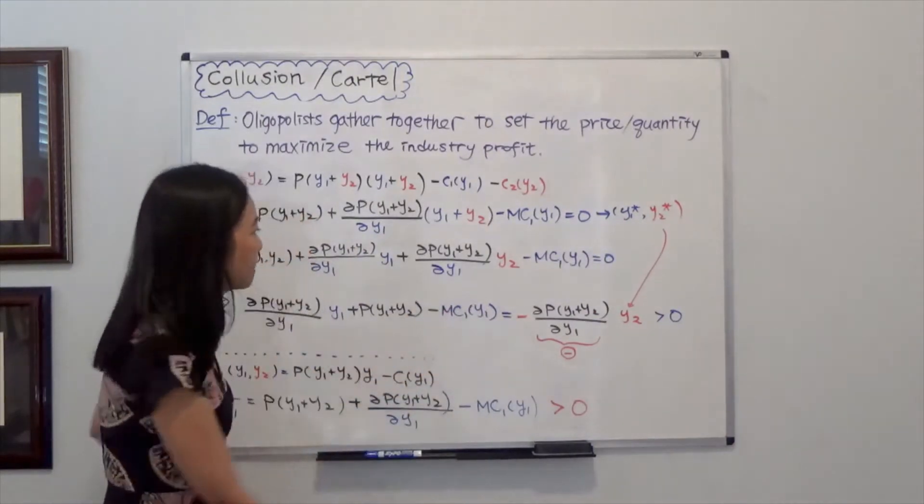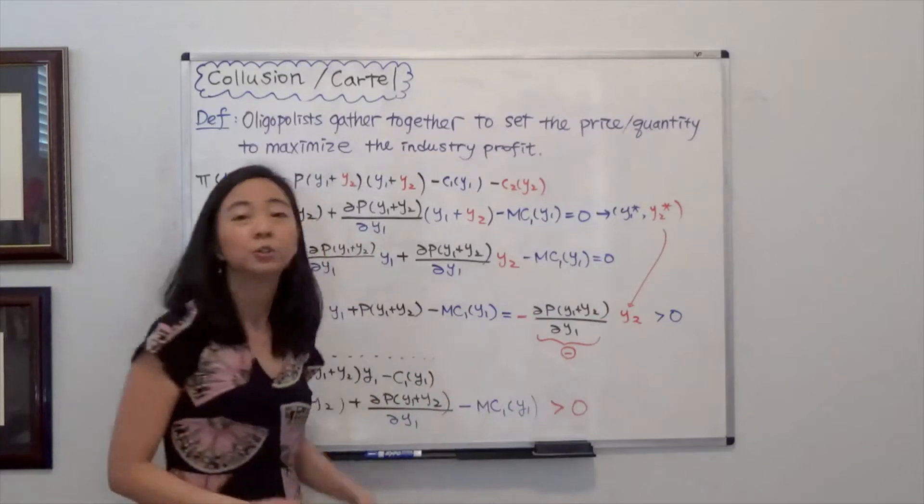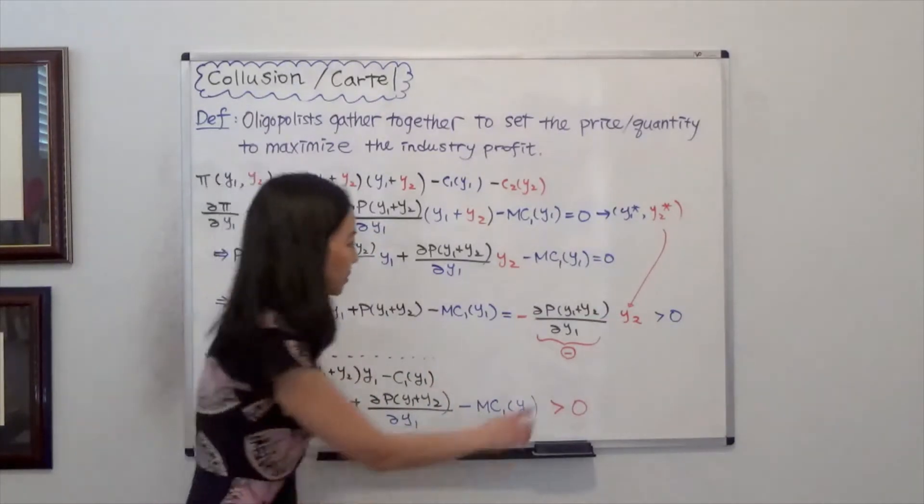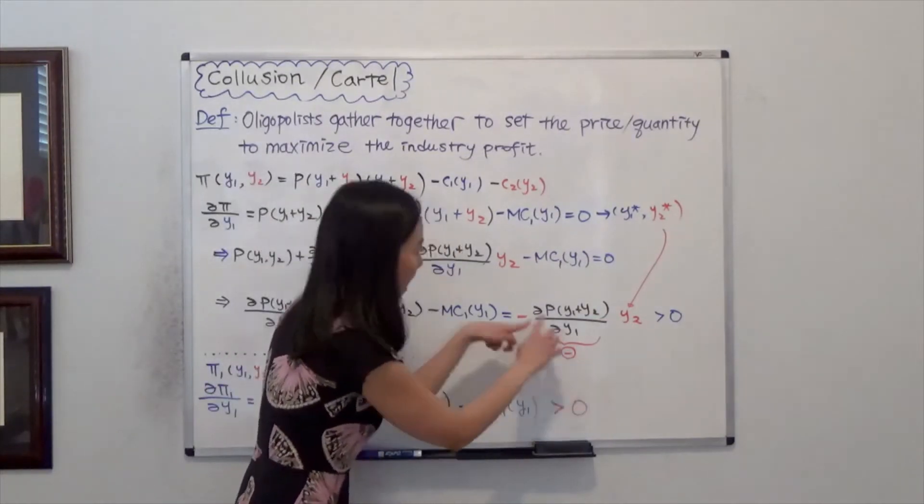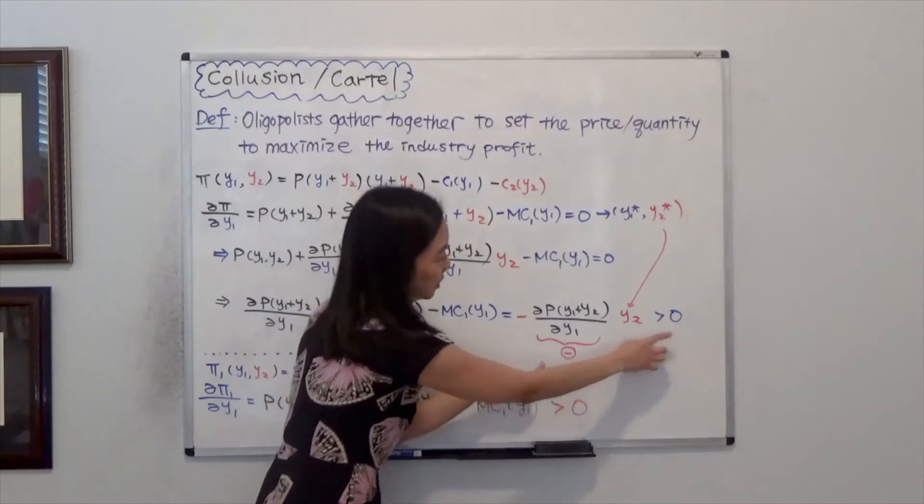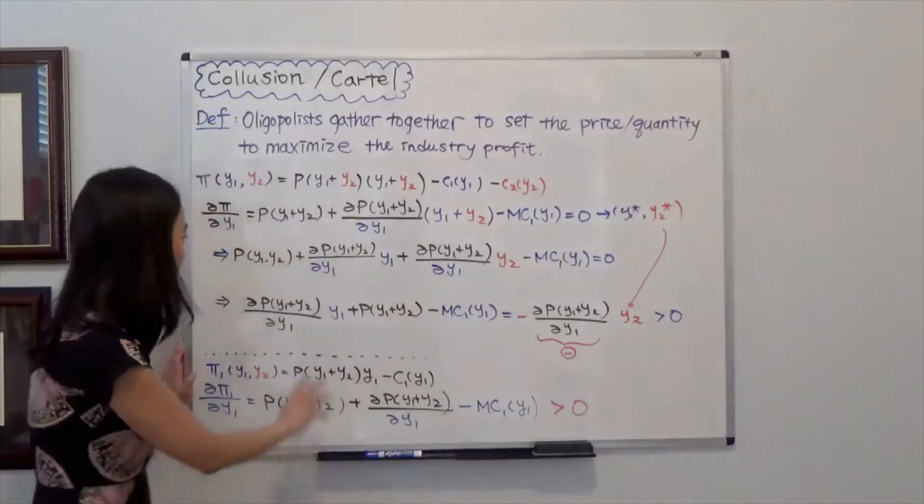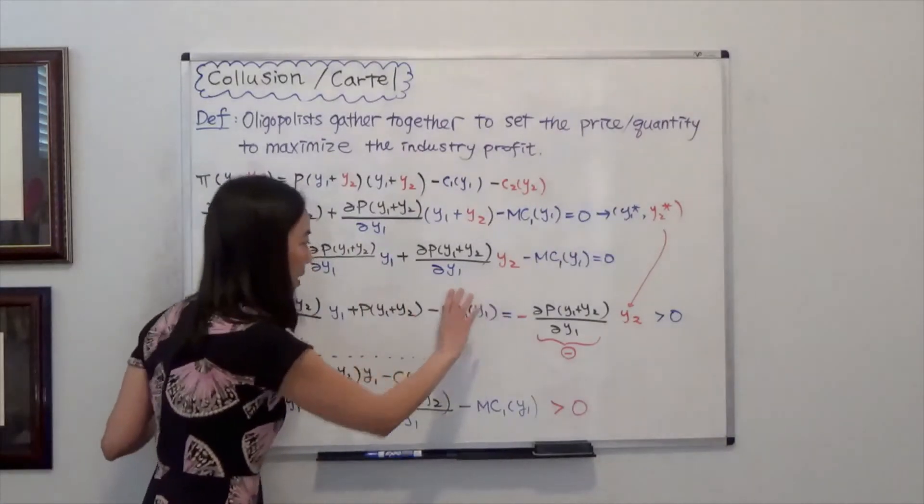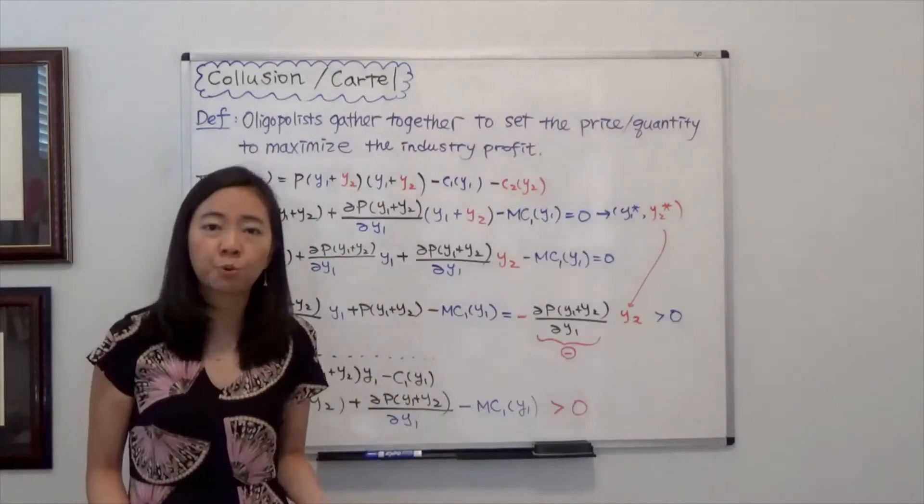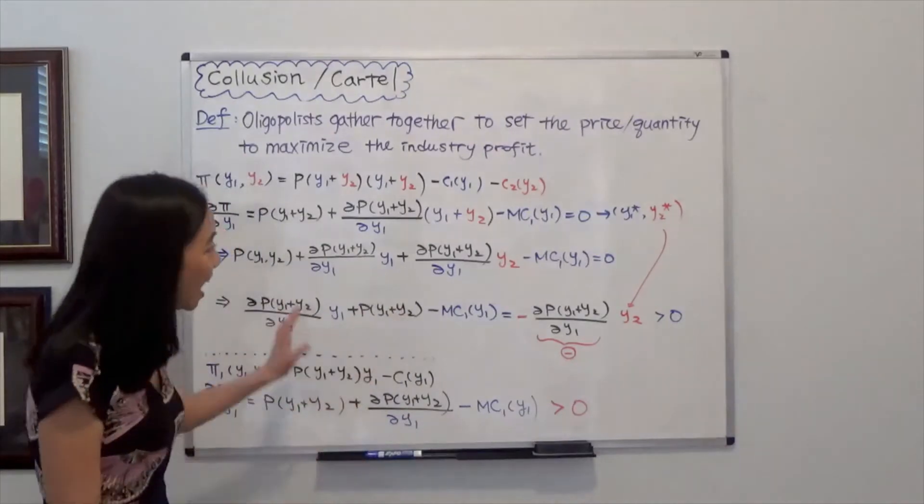Notice that partial pi, partial Y1 is negative due to the law of demand. So this is negative. Negative times negative is positive. So we know that the three terms adding them up is positive. And notice that these three terms adding them up is actually the marginal profit of firm 1 after the two firms achieve the cartel.